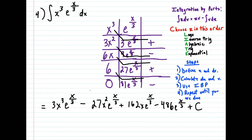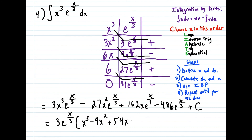And you see this process is way, way faster than if we were to define u and dv all the way down. But this is reserved for just a few examples where you have really high powers of x in front and you don't feel like doing this process more than once. And if we want to simplify our answer a bit, we could factor out a 3e^(x/3). The first term will be left with x³, the next term with minus 9x², the third term with plus 54x, and for the last term, minus 162. Close the parentheses and we got our plus c at the end. This is our final answer to the fourth question.